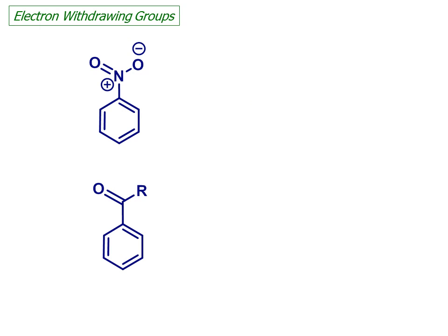But that's not all. If electron donating groups have this effect, what do you think an electron withdrawing group such as a nitro or acyl group will do, both to the reactivity and the position of electrophilic attack?